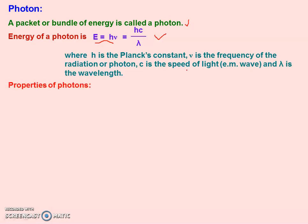We are now discussing the properties of photons. First, a photon travels at the speed of light, c, in vacuum — that is 3 × 10⁸ meters per second. Since a photon is an energy packet of light, it travels at the speed of light.